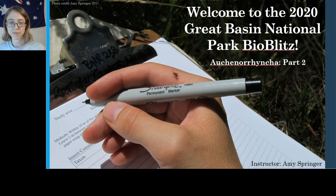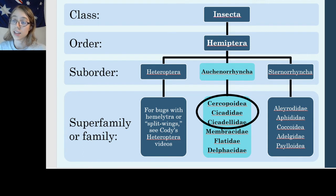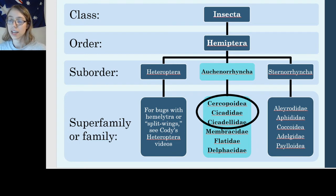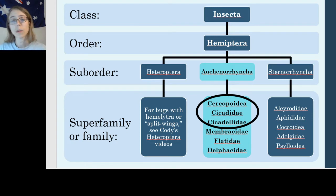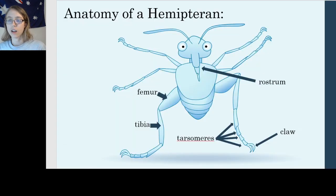To reorient you, we're in order Hemiptera, which is the focus of this year's BioBlitz, and I am covering suborder Auchenorrhyncha, the Free Living Hemipterans. In this video I'm going to talk about the ecology and the identification characteristics of three families or superfamilies: Superfamily Cercopoidea, Family Cicadidae, and Family Cicadellidae. Before we get to those three families, I want to go over a little bit of anatomy that's going to be helpful for identifying these groups.